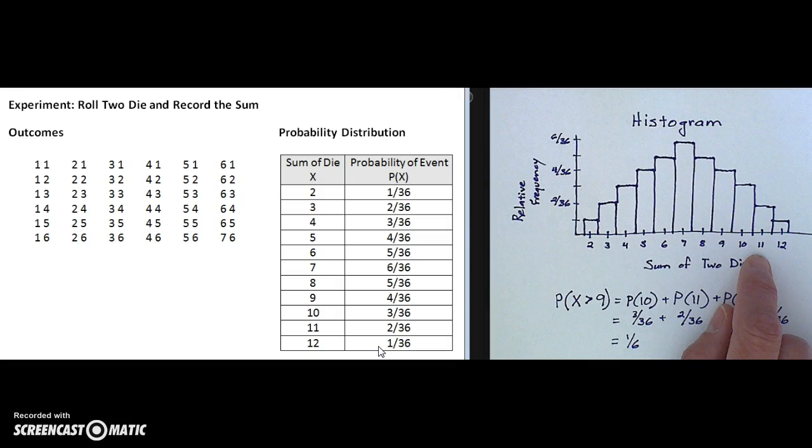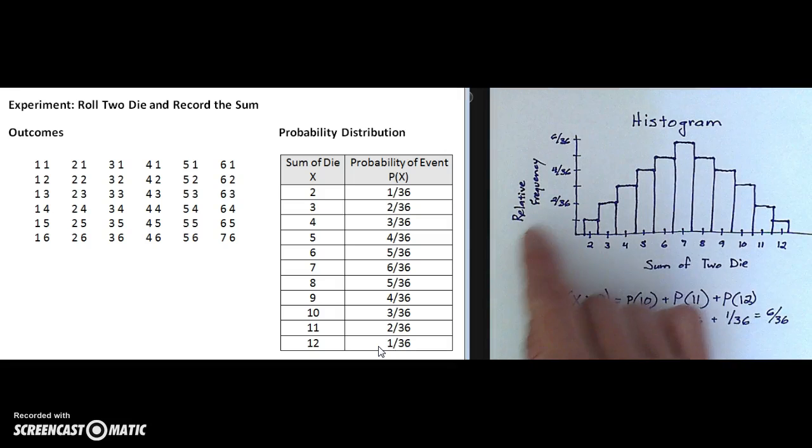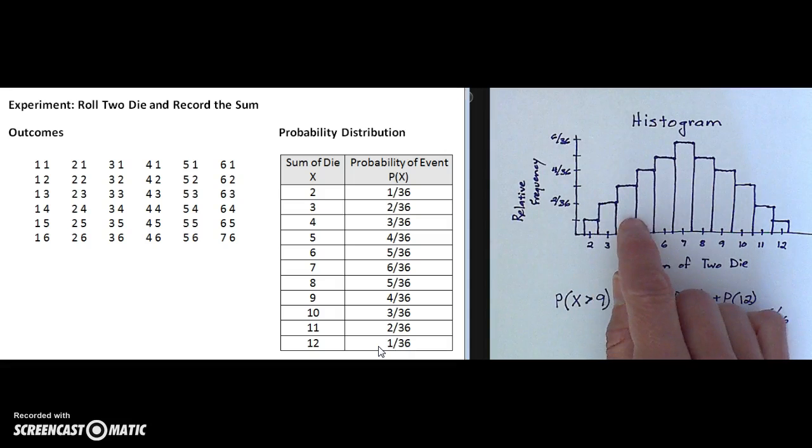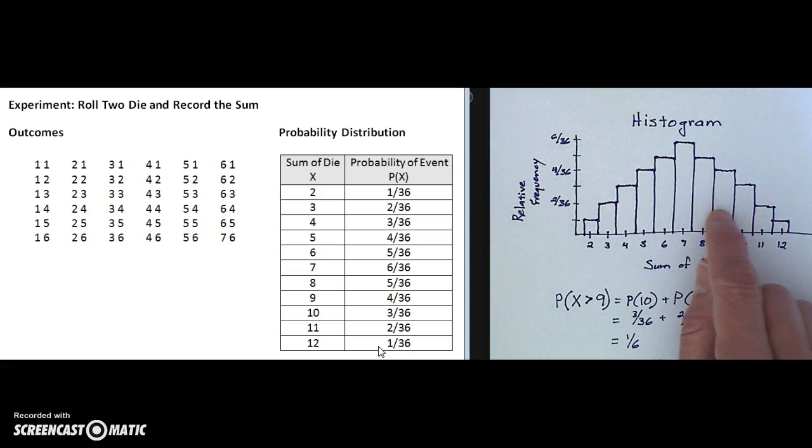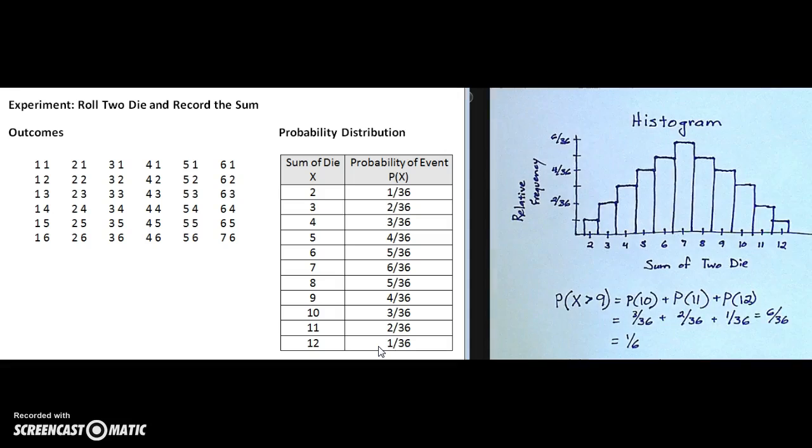Another feature of a histogram in relationship to relative frequencies and probabilities is that the area of all of these bars sums up to 1, because we know the sum of all of our events is 1.